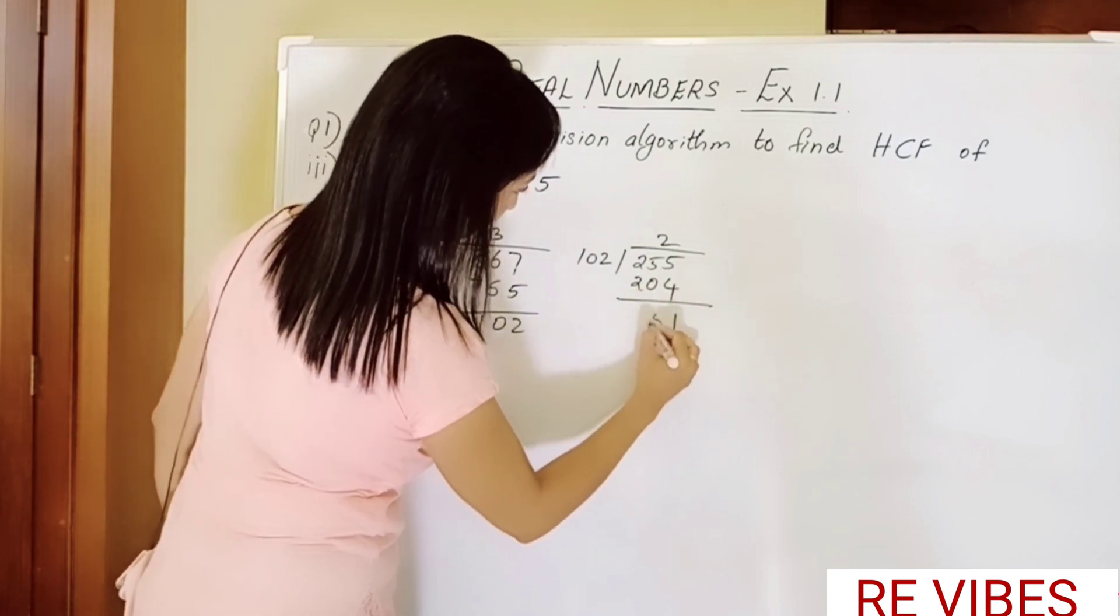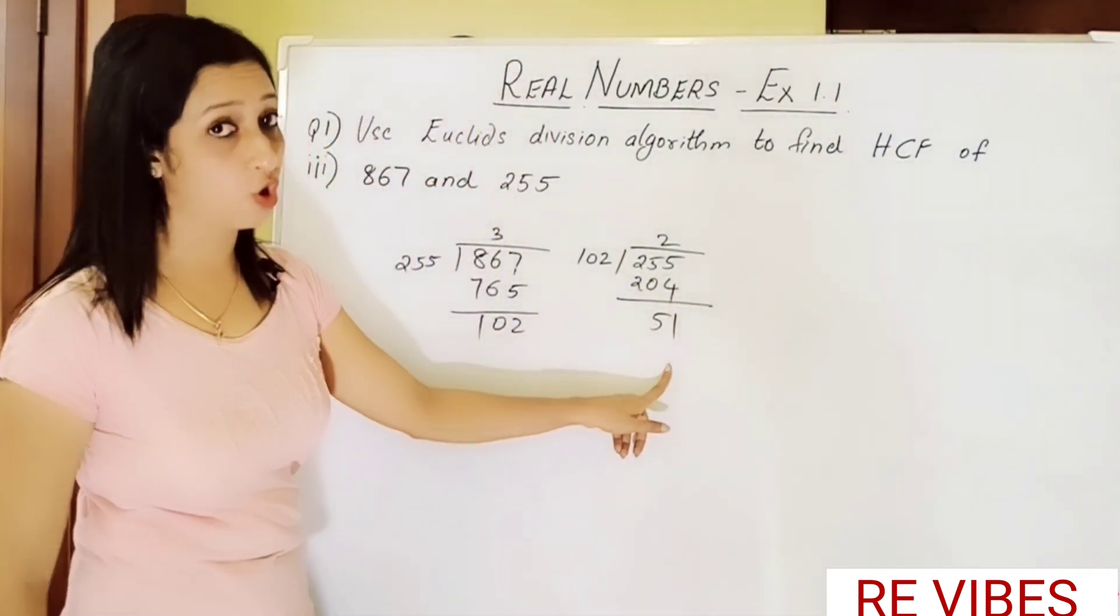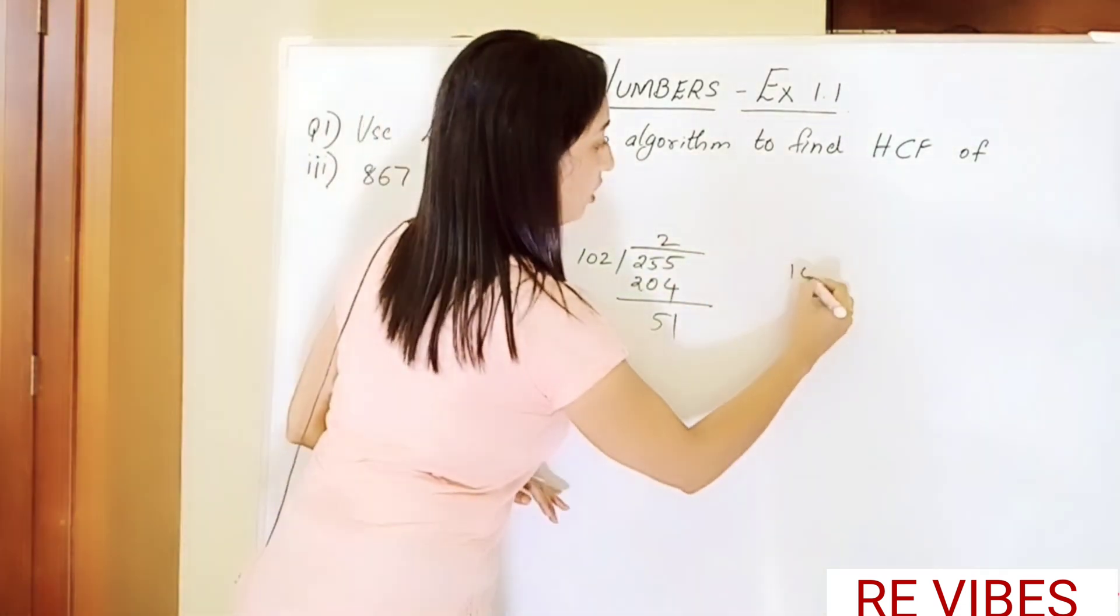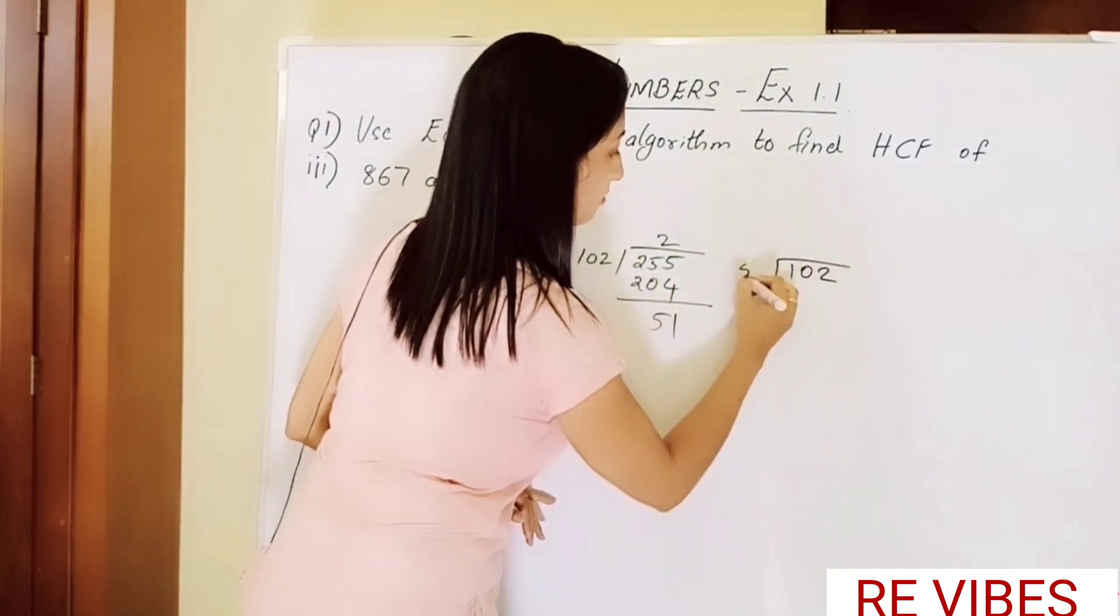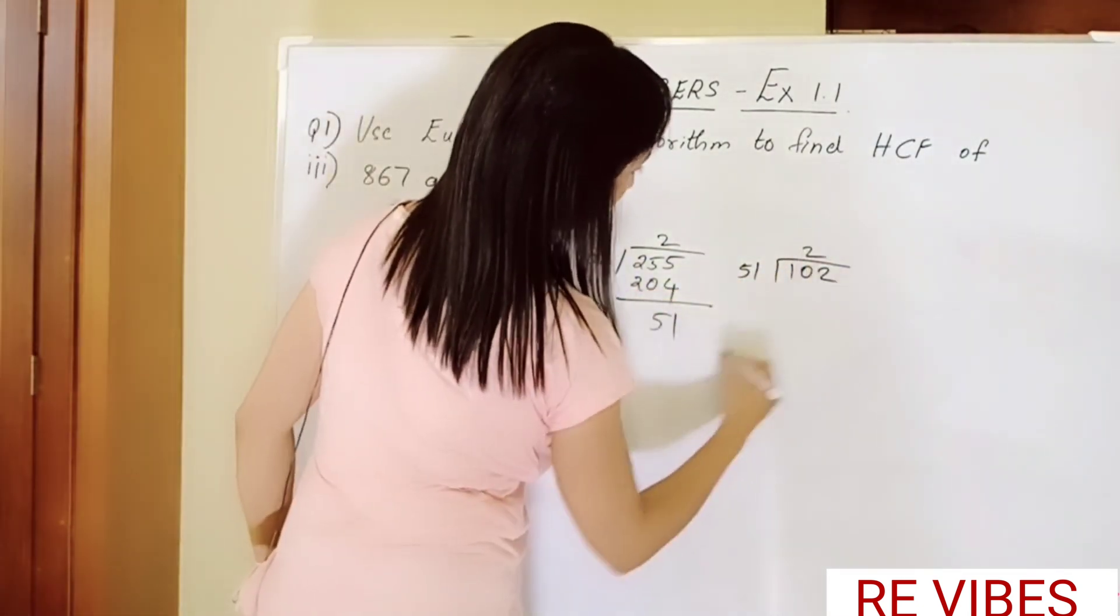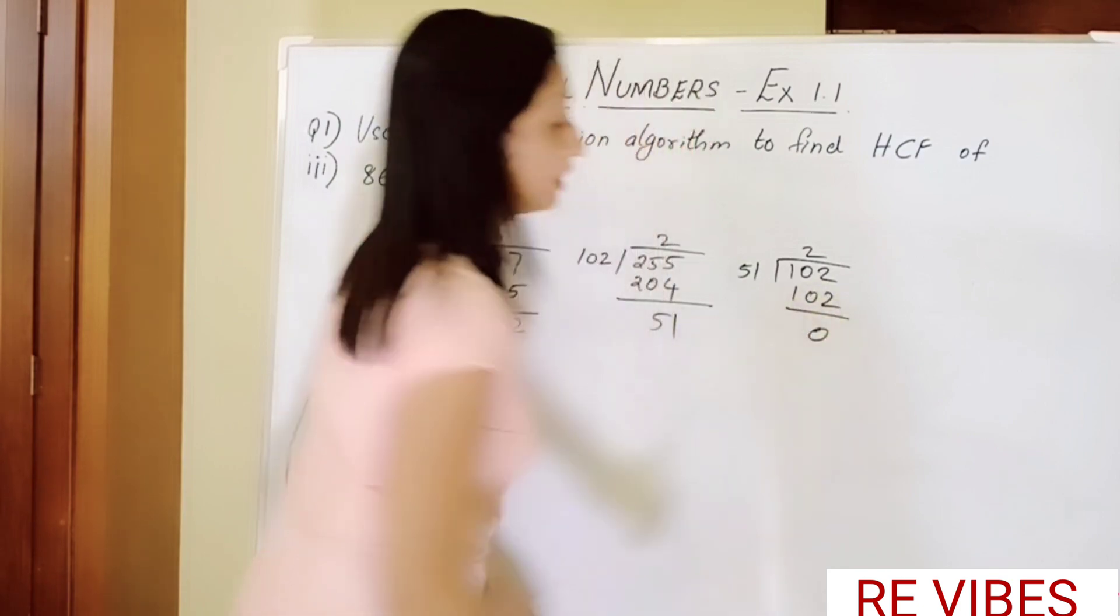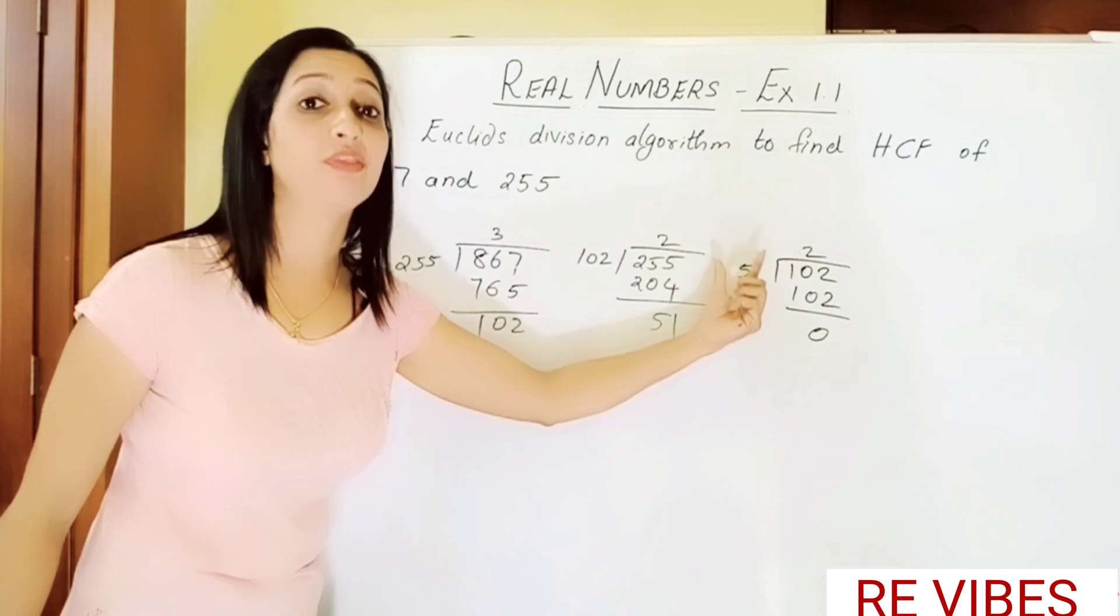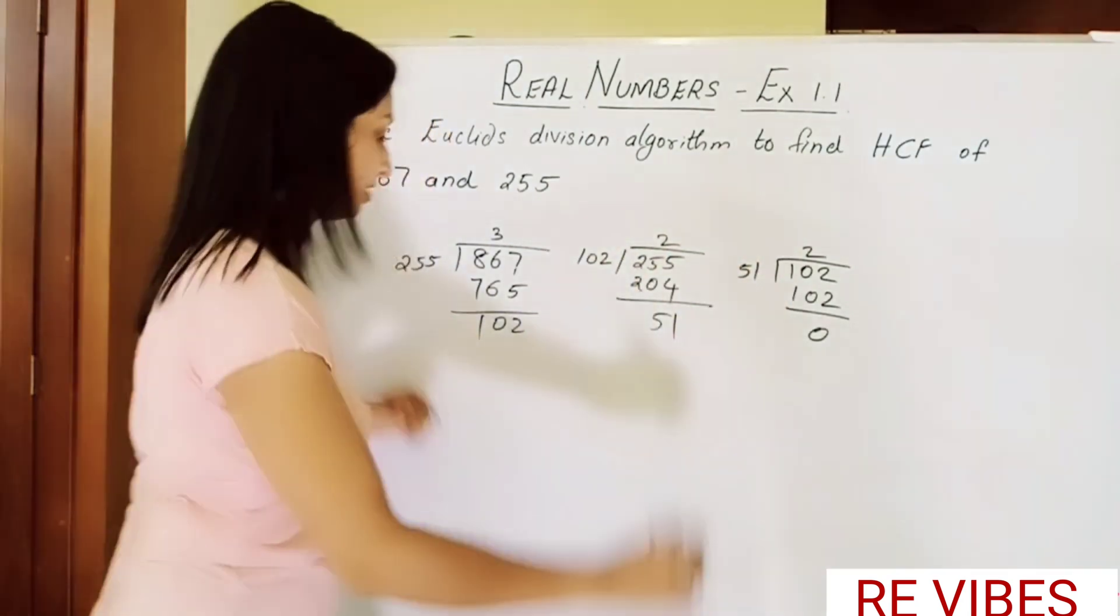So we perform the division again, so 102 divided by 51. 51 twos are 102, here we get the remainder 0. So what is our HCF? That divisor is our HCF.